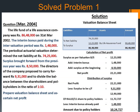Here is another question, asked in March 2004. The life fund of a life assurance company was Rs 86,48,000 on 31st March 2002. The interim bonus paid during the intervaluation period was Rs 1,48,000. The periodic actuarial valuation determined the net liability at Rs 74,25,000. Surplus brought forward from the previous year was Rs 8,50,000. The directors proposed to carry forward Rs 9,31,000 and to divide the balance between shareholders and policyholders in the ratio of 1 to 10. Prepare the valuation balance sheet and ascertain net profit.